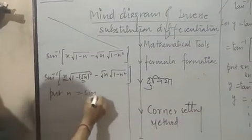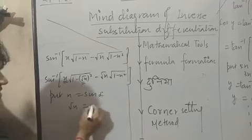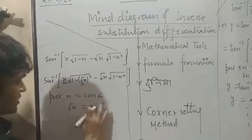Put x as sin alpha, root x as sin beta. This means two substitutions.